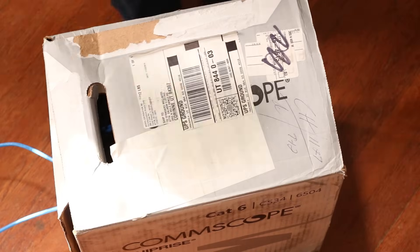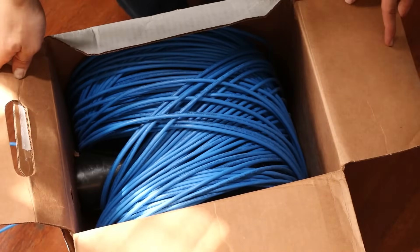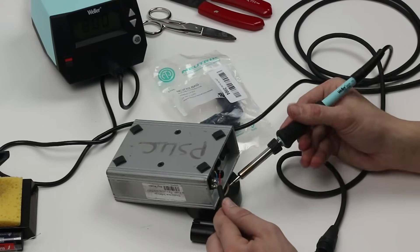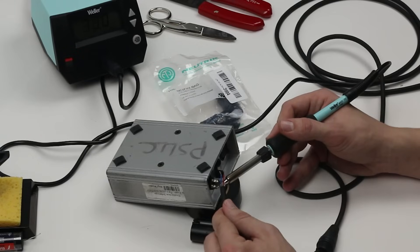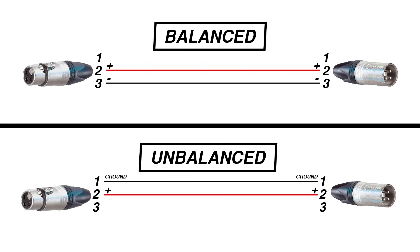Now for a demonstration of the difference between a balanced and unbalanced connection. Right here I've got a thousand feet of four conductor cable, which gives me two pairs of conductors to work with. With a bit of soldering, I can wire one pair to be balanced and the other pair to be unbalanced. The balanced pair will be wired between pins two and three of the XLR connectors and the unbalanced pair will be wired between pins one and two.